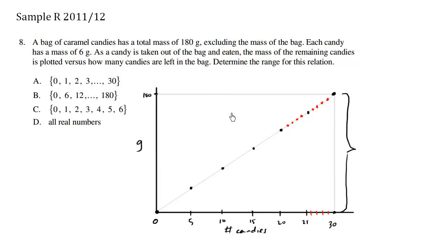So we're only interested in the actual distinct numbers, not the actual decimal numbers. But here we have the y value of 0, we have the y value of 6, 12, all the way up to 180. So choice B would be the correct answer.